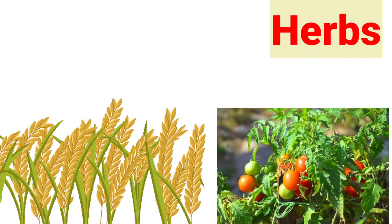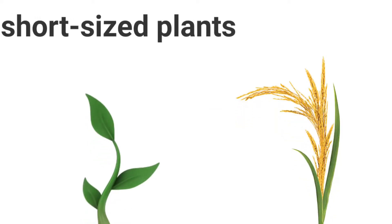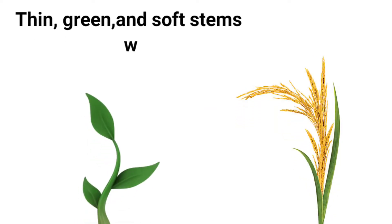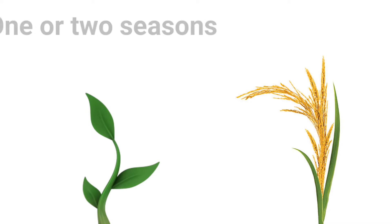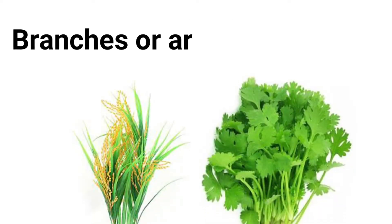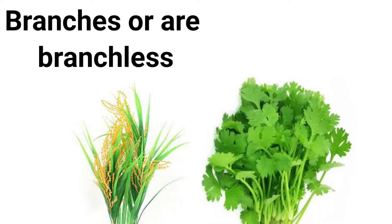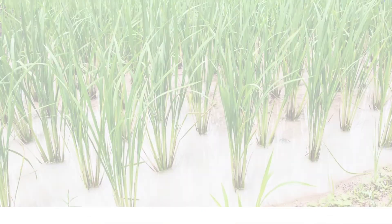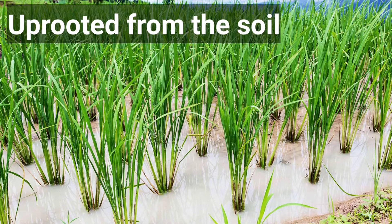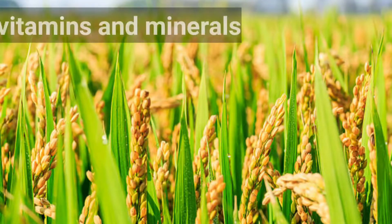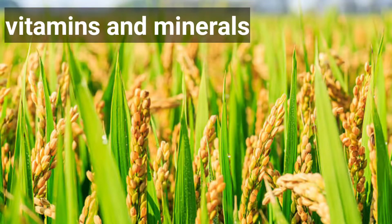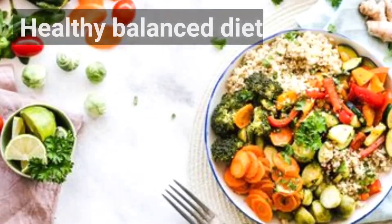Herbs are very small plants with thin, green and soft stems without woody tissues. They complete their life cycle within one or two seasons. Generally they have few branches or are branchless. These can be easily uprooted from the soil.